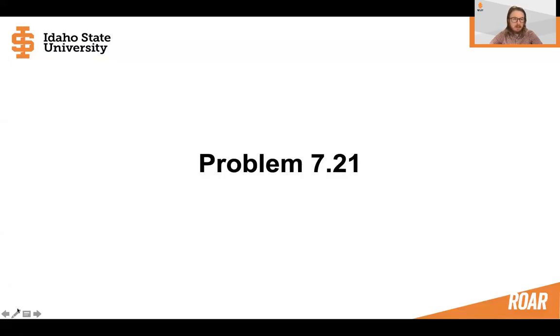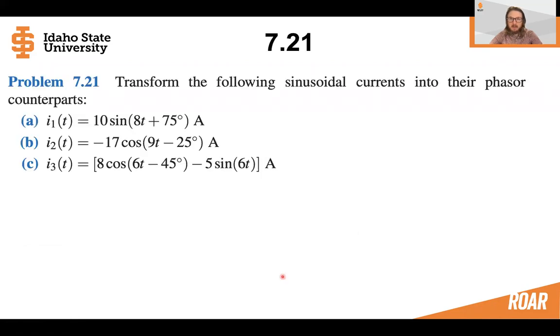Hello everybody. Now let's solve problem 7.21 together. Problem 7.21 asks us to transform sinusoidal currents into phasers. We have three different currents that we are going to transform.